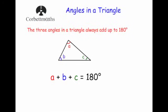In this video we're going to look at angles in a triangle. The three angles in a triangle always add up to 180 degrees. So if you've got a triangle, the angles A, B, and C will always add up to 180 degrees.